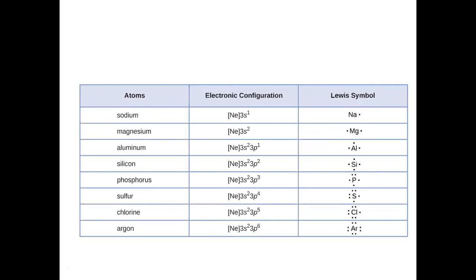If you see argon, 6 and 2 is 8. 3s2, 3p6. How many electrons are? 8. 1, 2, 3, 4, 5, 6, 7, 8. So this configuration is complete. And the rule of argon is complete.